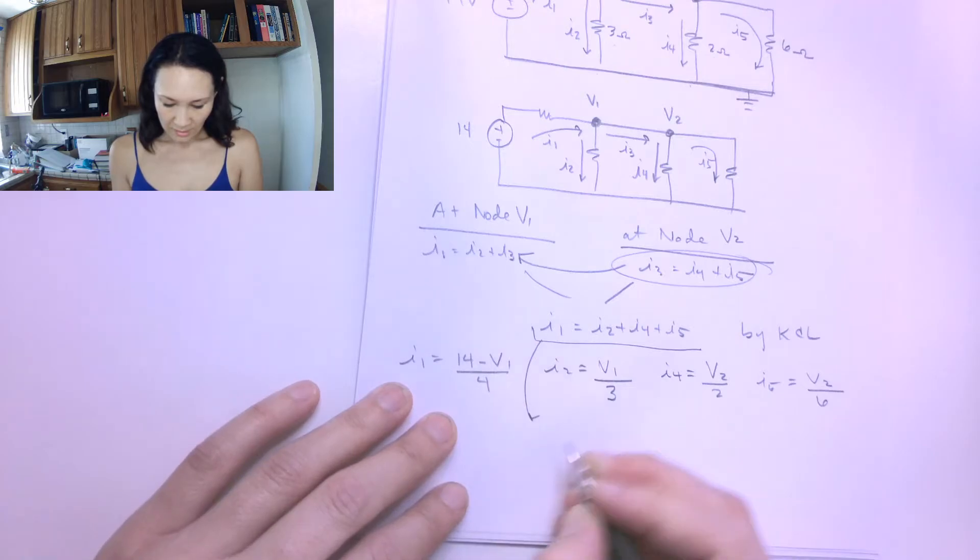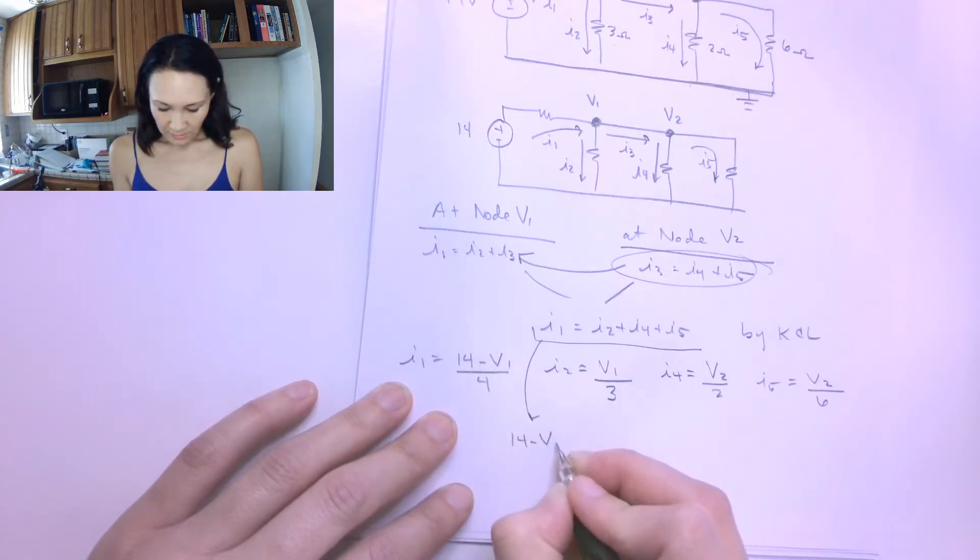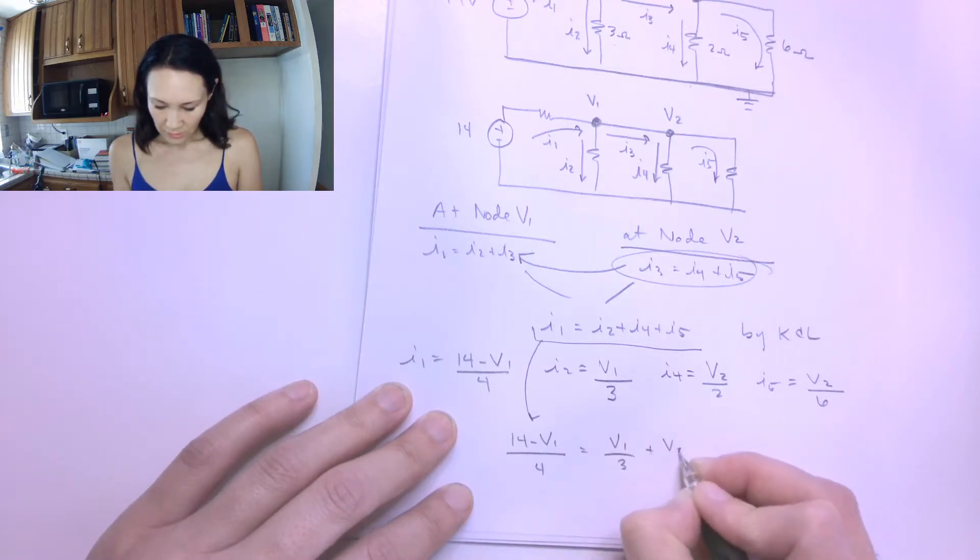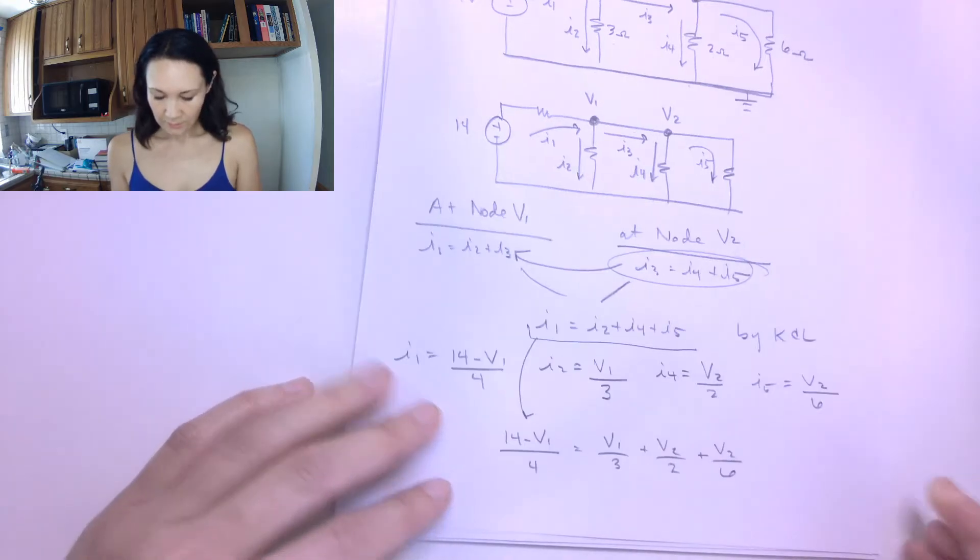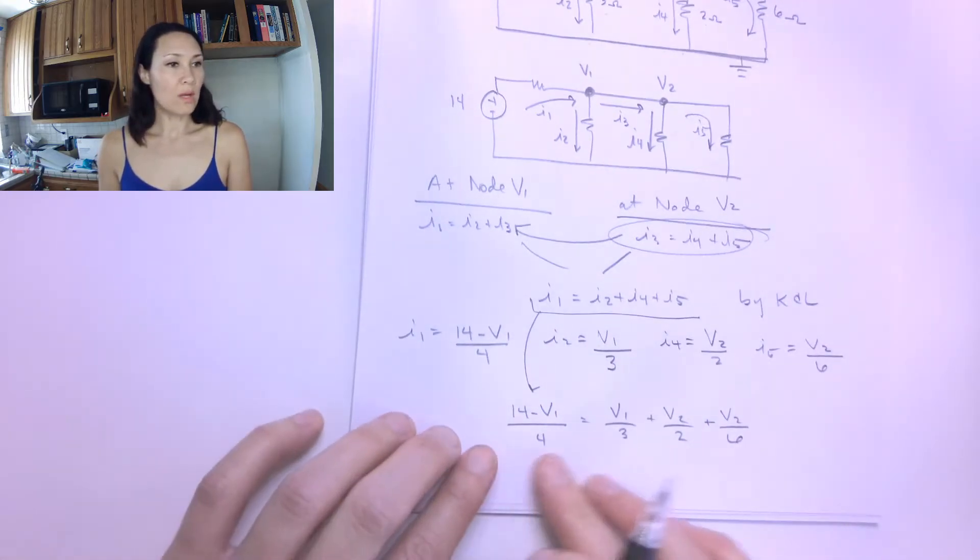So this equation becomes 14 minus V1 over 4 is equal to V1 over 3 plus V2 over 2 plus V2 over 6. So I have one equation here, but two unknowns.